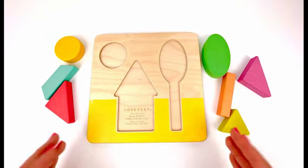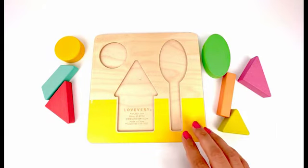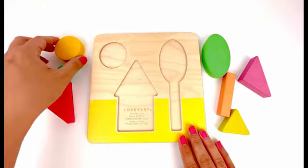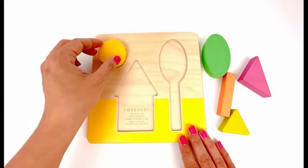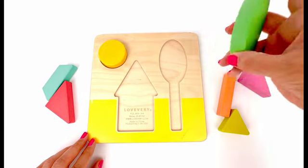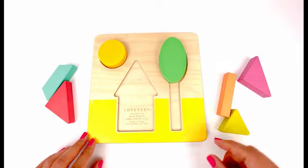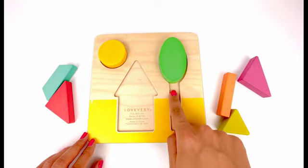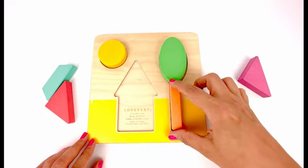We have a puzzle and some shapes over here. Let's put the shapes back into the puzzle and see what happens. This yellow circle goes right over here. And I'm pretty sure this green oval goes here. That looks like a tree. Now I need the trunk. This rectangle could be a perfect fit.